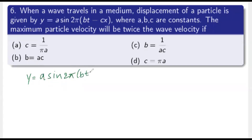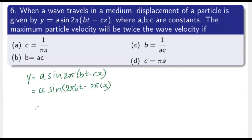Let me convert this into standard form: y = a·sin(2πbt - 2πcx). The coefficient of t gives omega: ω = 2πb, and the coefficient of x gives the wave number k = 2πc. The amplitude is a.